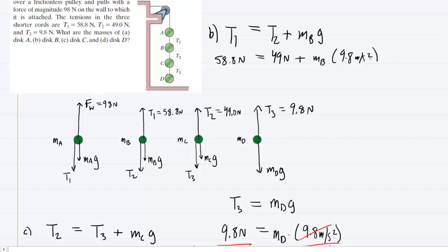You'll solve this in the same way that we solved it in part C. So go ahead and subtract 49 from both sides then divide by 9.8 and you will find that one kilogram is the mass of disk B. So this is the correct answer to part B.